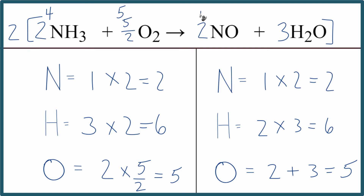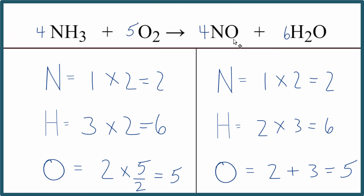If you need whole numbers, you can multiply the whole thing — all the coefficients — by two. Two times two gives us four; two times five over two, the twos cancel out, leaving just five; two times two is four; and two times three is six. So let me clean that up and put those new coefficients in. These would be the whole number coefficients for the equation NH3 plus O2.